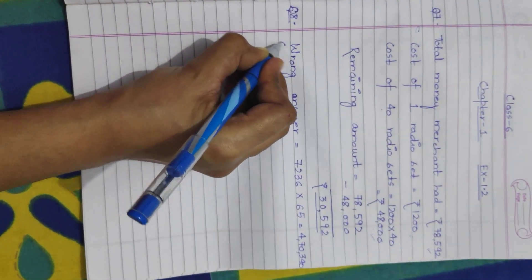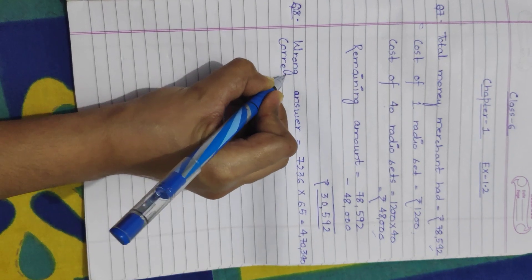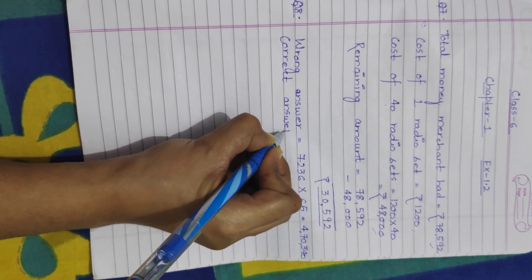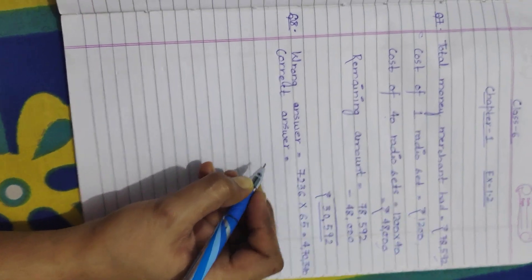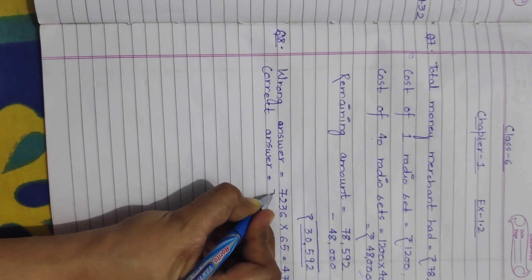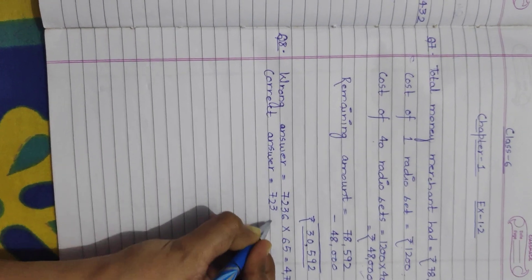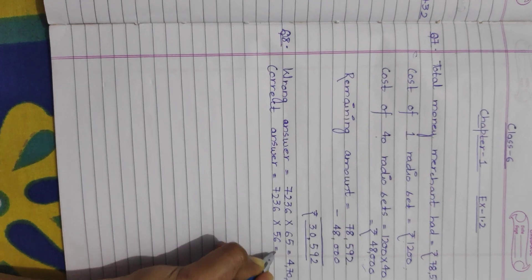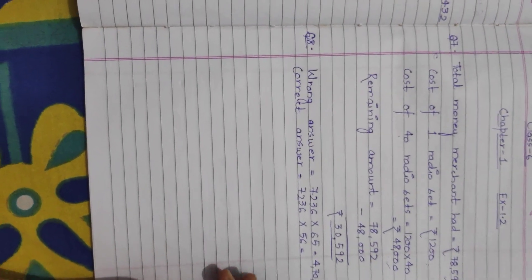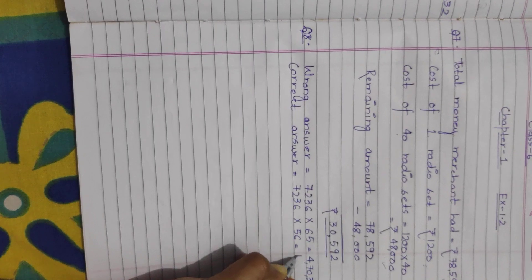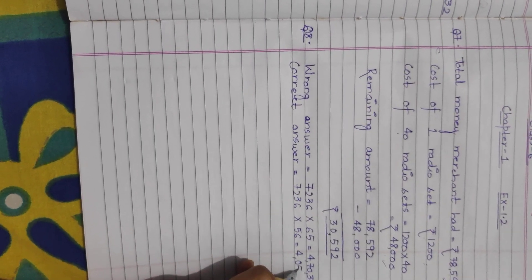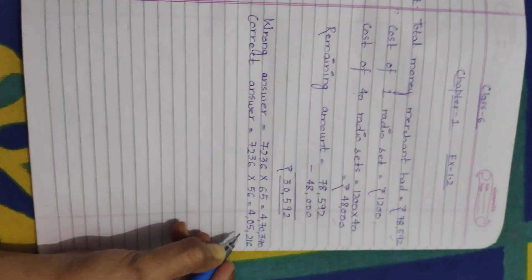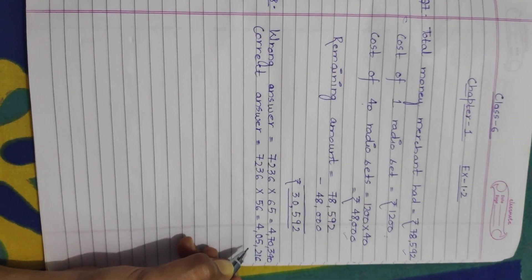Next is the correct answer. For calculating the correct answer, we will multiply the same number 7,236 with the correct multiplier, which is 56. Multiplying them, the correct answer is 4,05,216.